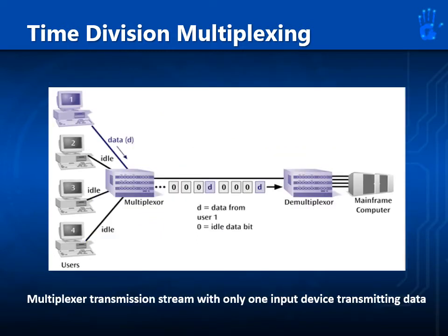Synchronous TDM has an inefficiency problem. If only user 1 transmits data and users 2, 3, and 4 are idle, the multiplexer still allots a time slot for the idle users. The speed remains the same even if three users are idle. The frame goes from data 1 and then zeros for the three idle users, and the next frame repeats the same pattern. This inefficiency can be solved by using an asynchronous TDM system.